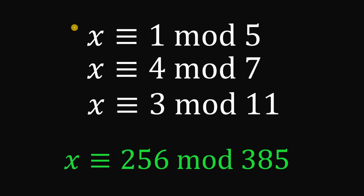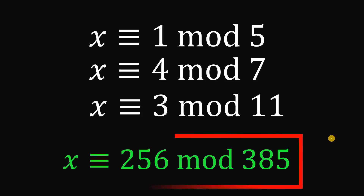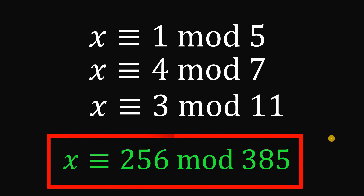Therefore, given the congruences x is congruent to 1 mod 5, x is congruent to 4 mod 7, and x is congruent to 3 mod 11, we get the answer: x is congruent to 256 mod 385. And as always, we are done. Thank you.